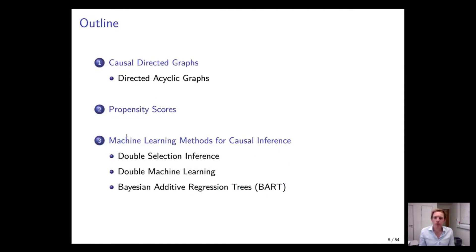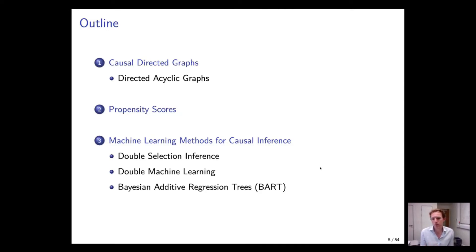Today I'll cover various frameworks for causal inference, and I prefer causal directed graphs because they're slightly more intuitive. First I'll introduce directed graphs and how to interpret them for causality. Then I'll discuss propensity scores, which can be related to directed graphs and are used for estimating causal effects. After that, if we have time, we'll look at three machine learning methods: double selection, double machine learning, and Bayesian additive regression trees.